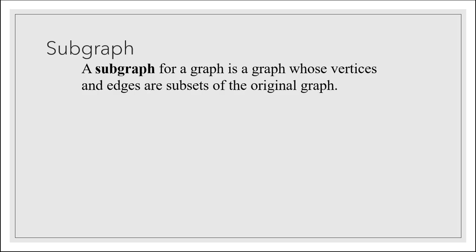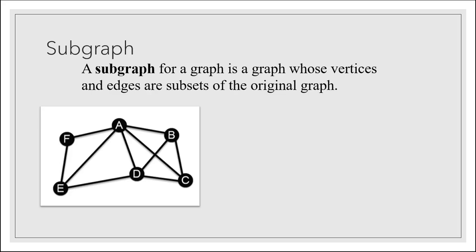Another definition that will be useful to us when we're talking about spanning trees is a subgraph. A subgraph for a graph is a graph whose vertices and edges are subsets of the original graph. If this is our original graph, an example of a subgraph would be this smaller graph that has four of the original vertices connected by four of the original edges.